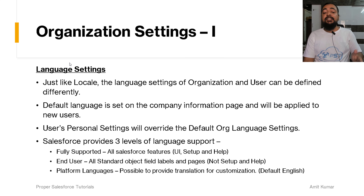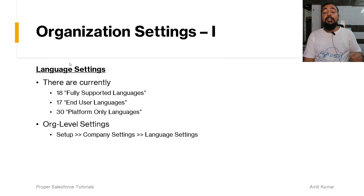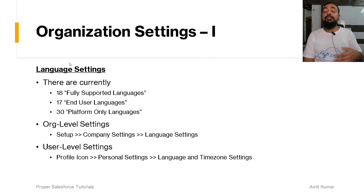For platform languages, we have to provide the translation for customization ourselves. Salesforce currently provides 18 fully supported languages, 17 end user languages, and 30 platform-only languages. For org-level settings, we can choose the language from the Company Information page. For user-level language, we can go to the profile icon, then Personal Settings, and change it from the Language and Time Zone settings option.